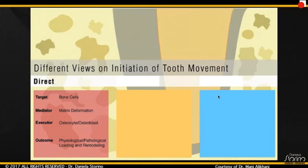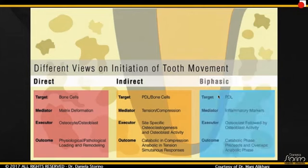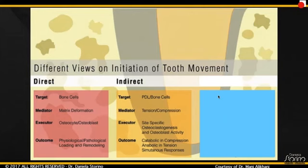Looking at Dr. Mani Alikhani's book — going back to paradigm shifts: we started with heavy forces using conventional brackets, which caused matrix deformation and undermining resorption. The teeth would be wobbly for three weeks. That was pathological loading and remodeling, with a lot of pain for the patient. Then, about 15 to 20 years ago, we started understanding lighter forces, tension side versus compression side. On the tension side you'd have osteoclastic activity and on the compression side osteoblasts — resorption and direct bone apposition simultaneously. Now we know it's biphasic: the target is the PDL, and we're creating inflammation.